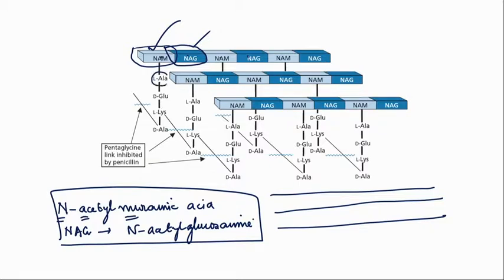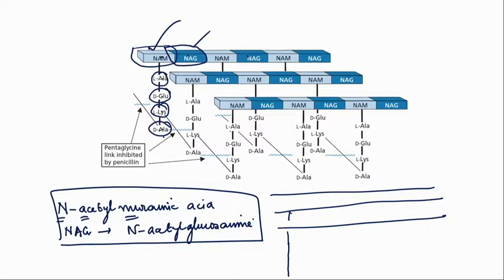The peptide attached to each NAM consists of: L-alanine, D-glutamic acid, L-lysine, D-alanine, and D-alanine — a pentapeptide. While forming the mature cell wall, the terminal D-alanine is expelled. We are discussing the state just before the mature cell wall forms, when all five amino acids are still present, hanging from each strand of the sugar polymer.